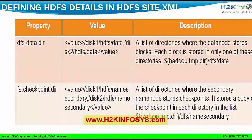The property 'fs.checkpoint.directory' will give you a list of directories where the secondary name node stores the checkpoints. Every particular interval, I need to copy the FS image and edit blocks from my name node to my secondary name node. This is where the location actually stores those values.